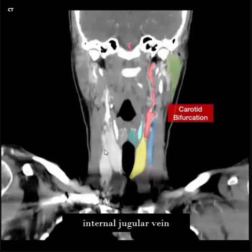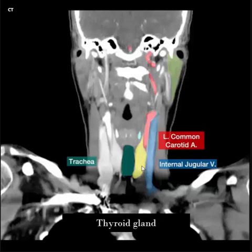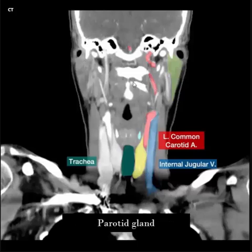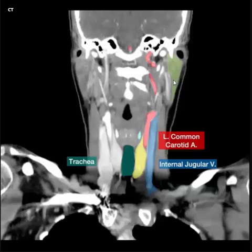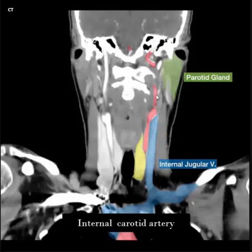Internal jugular vein, right and left. Right and left parotid gland. Trachea, right and left thyroid gland, right and left common carotid artery, internal jugular vein. Right and left internal carotid artery, right and left parotid gland. Parotid gland, internal carotid artery, common carotid artery, internal jugular vein.